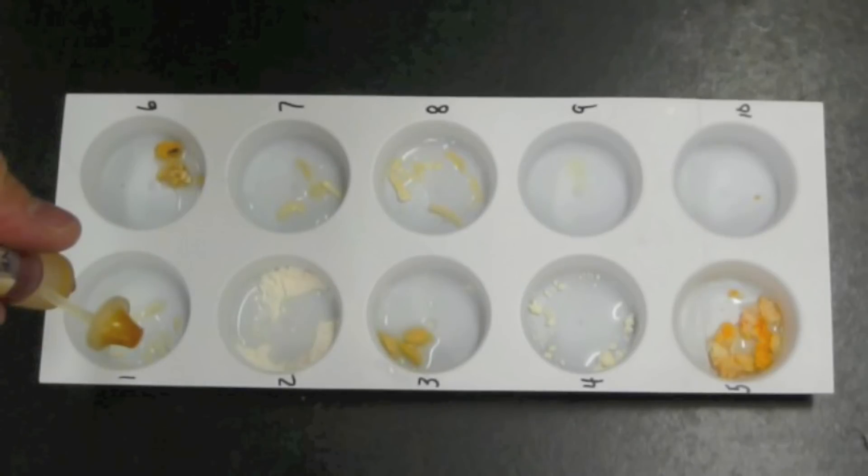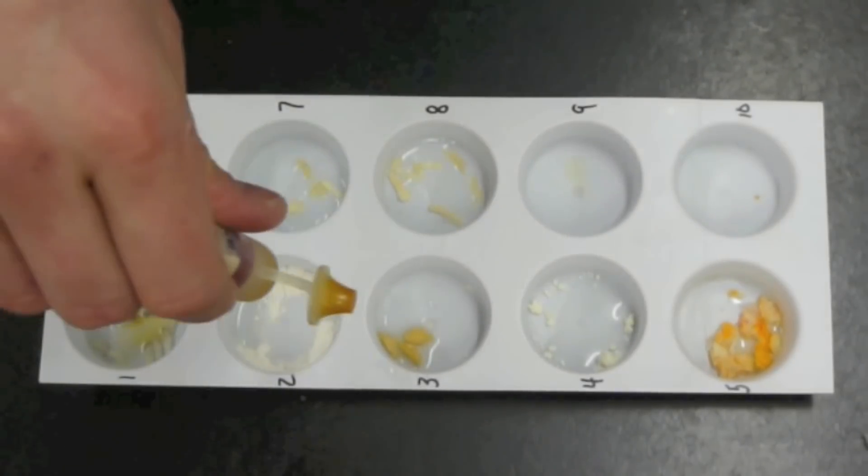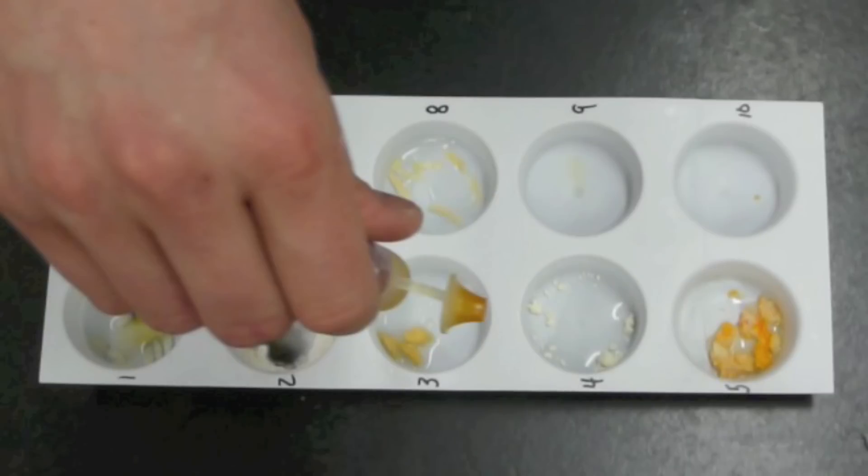First we add iodine to the rice and water mixture. Next we add iodine to the flour and water mixture. In this section we add iodine to the apple and water mixture.